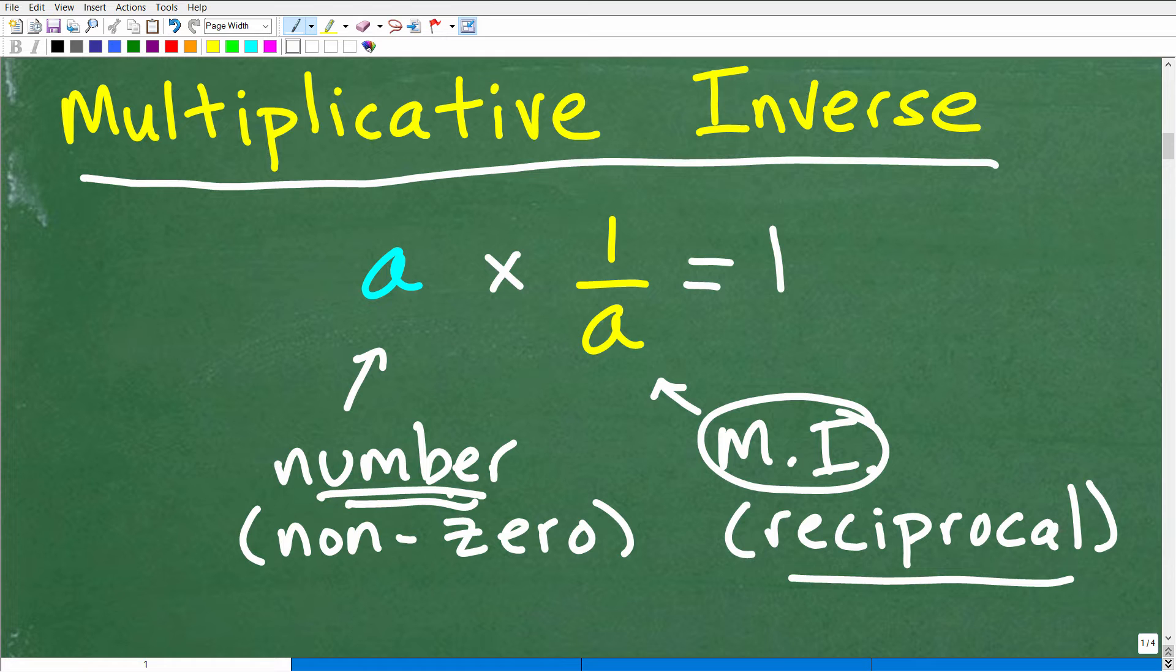Well, this reciprocal, this 1 over a, would be the multiplicative inverse of this number here. Now, how do we know that? Well, we can verify that because the product of these two numbers, a and 1 over a, is equal to 1. So anytime you have two things being multiplied together and you have the product of those two things is equal to 1, well, you're dealing with a number and its multiplicative inverse, i.e. its reciprocal.